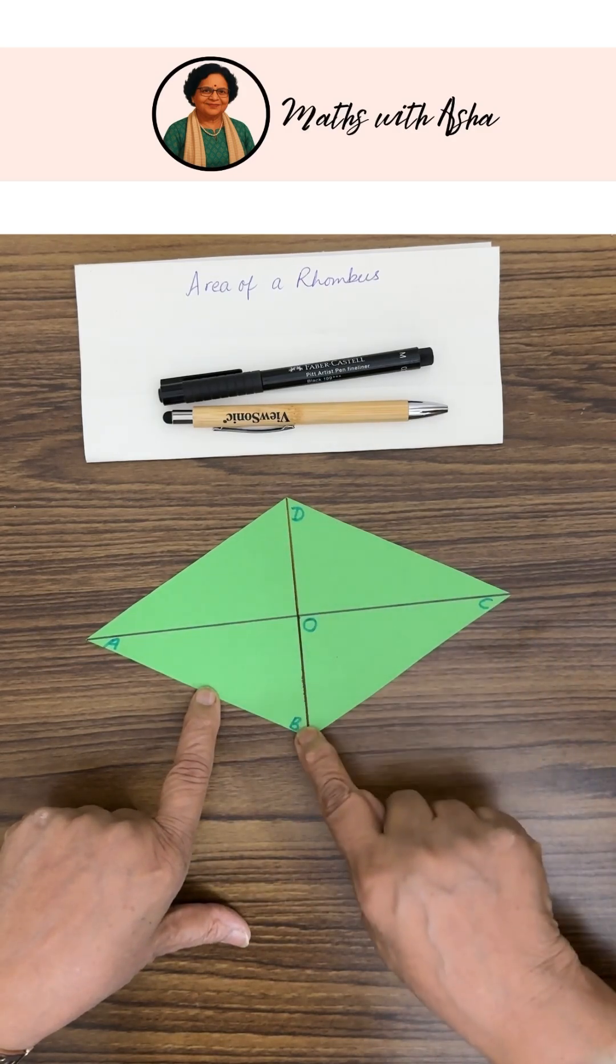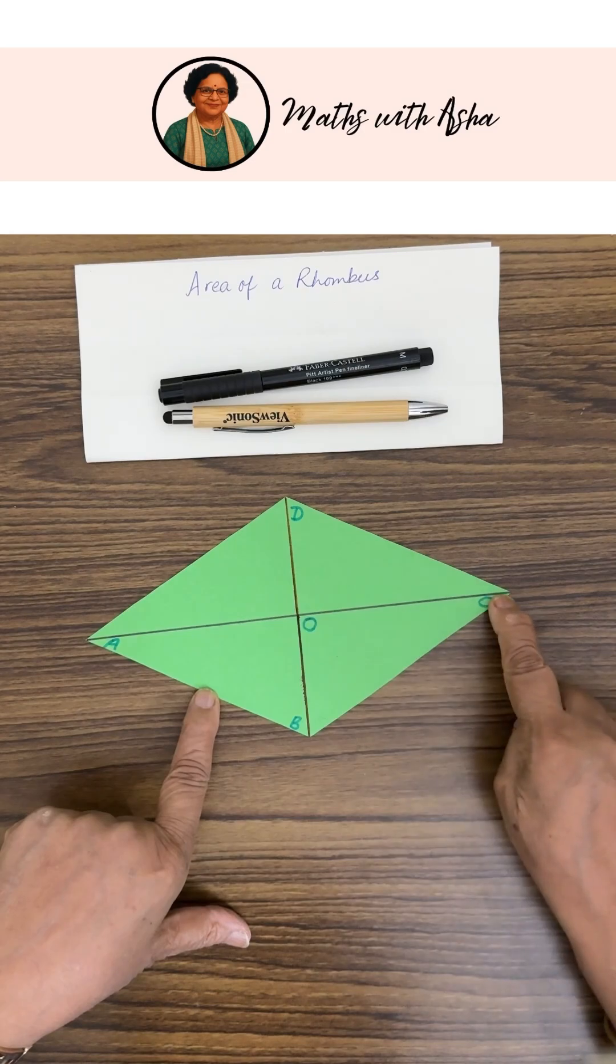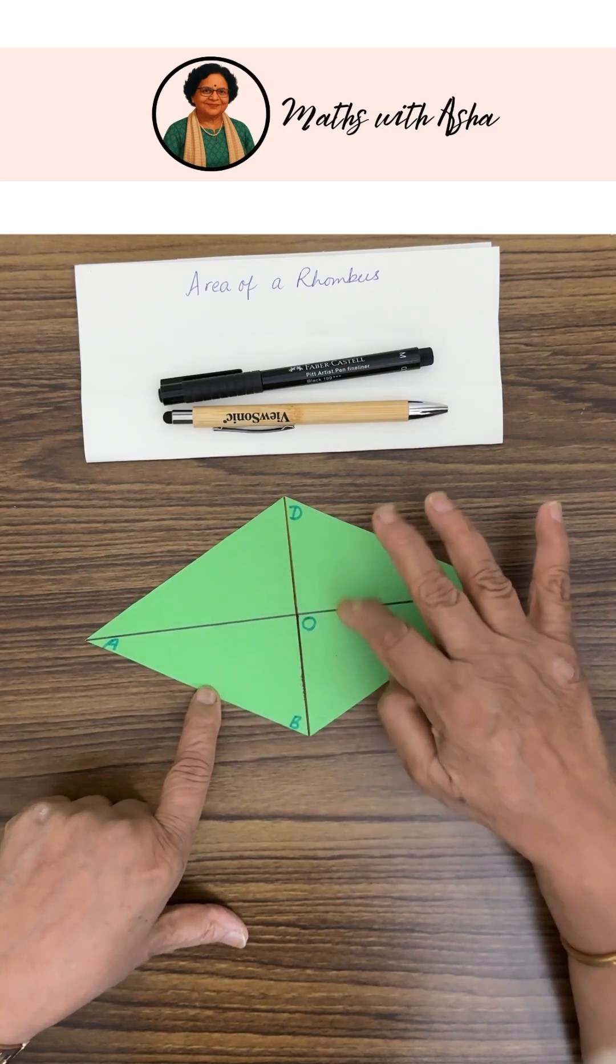We have taken another copy of this and we cut it along the two diagonals AC and BD so that we get four triangles.